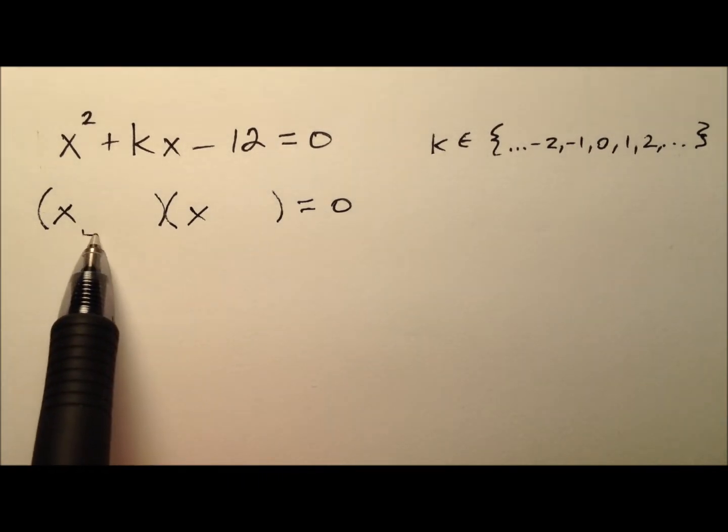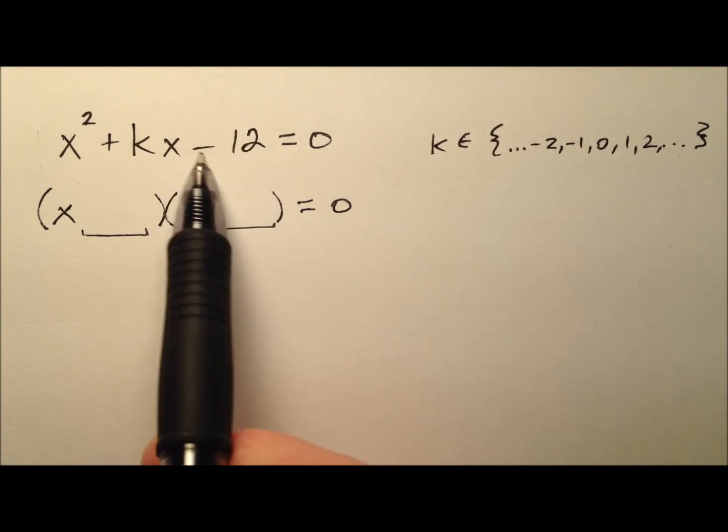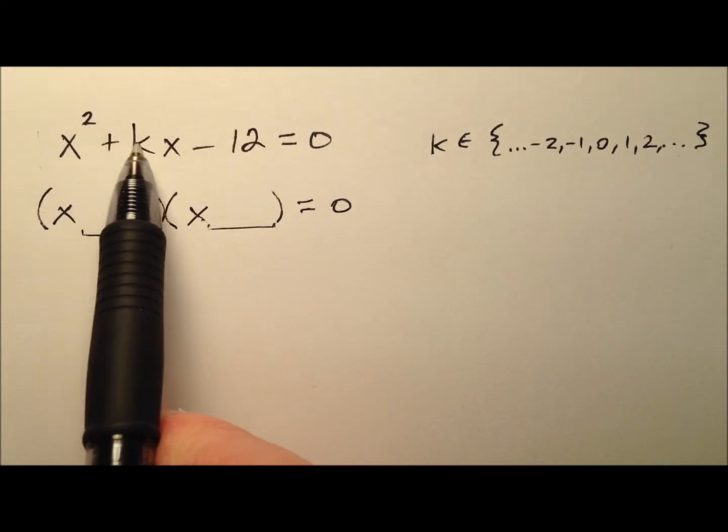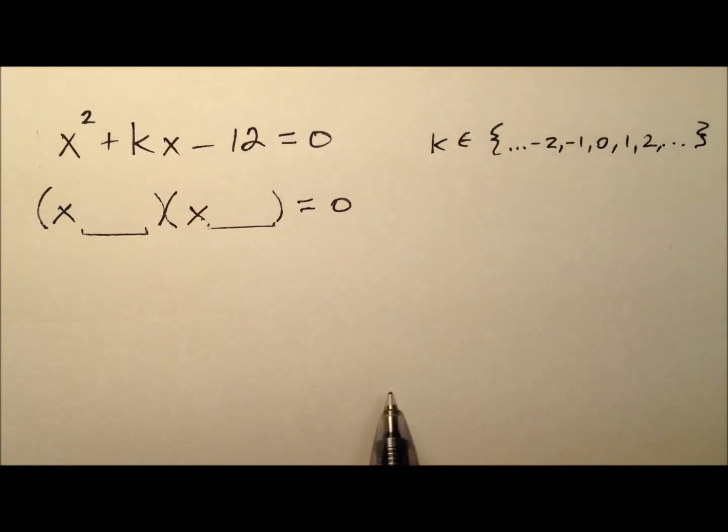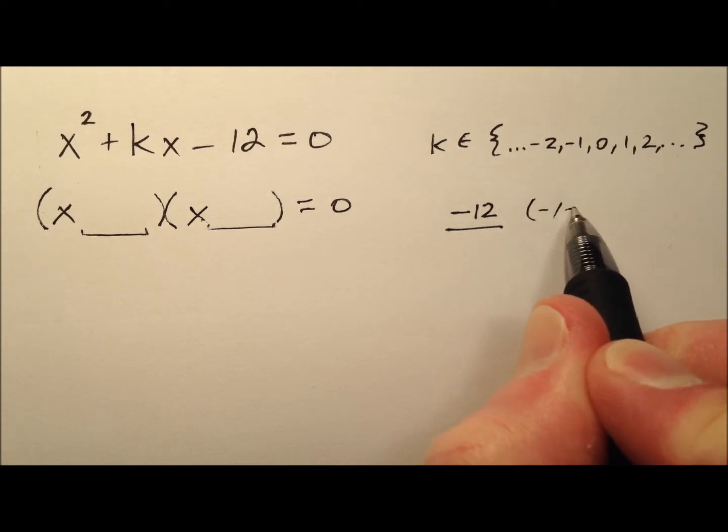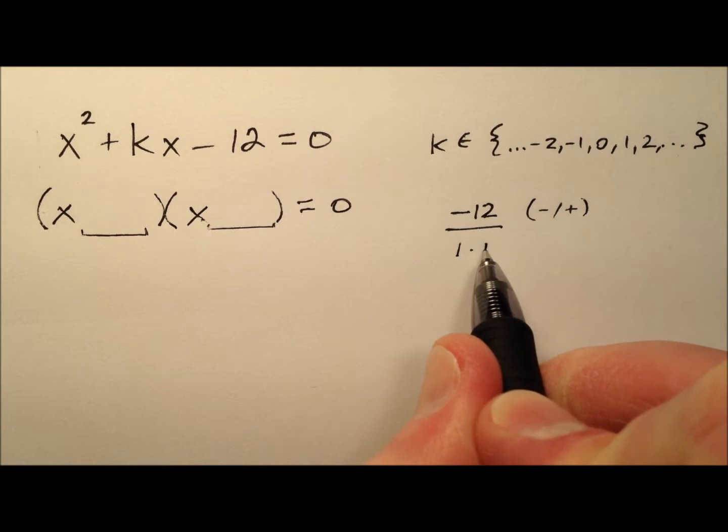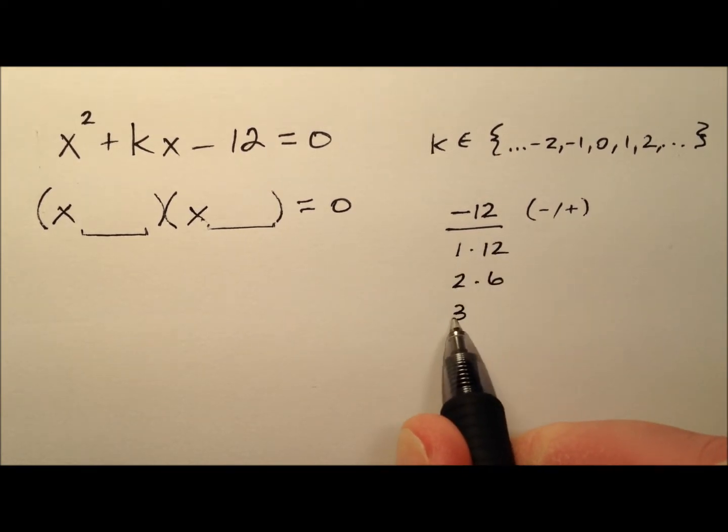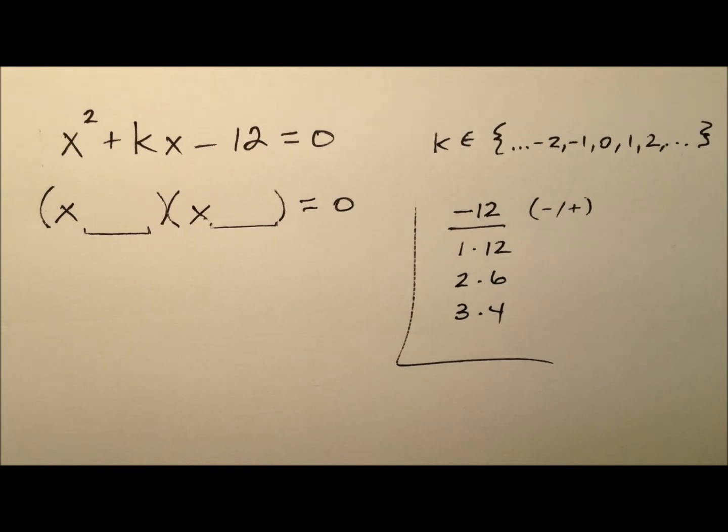What will go here? Numbers that multiply to make negative 12 and add to make k. To multiply to negative 12, one factor has to be negative and one positive. Factors of 12 are 1 and 12, 2 and 6, and 3 and 4.